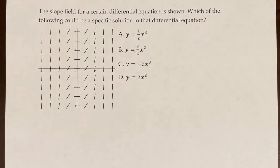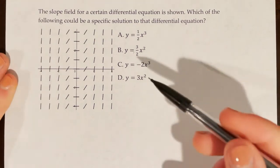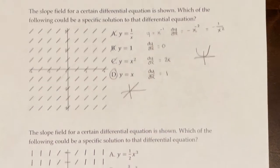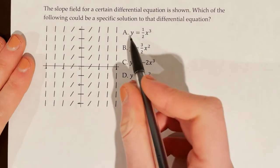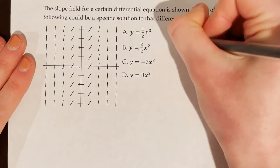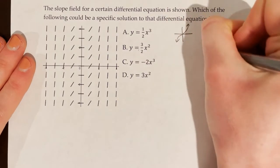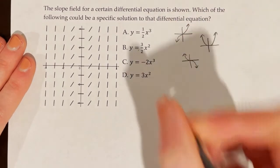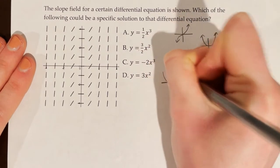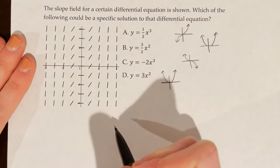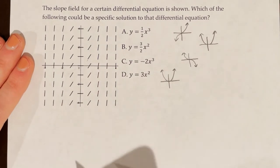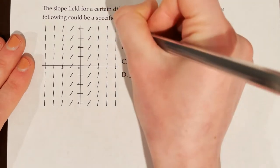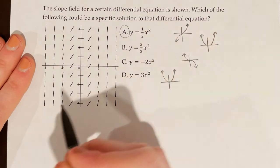For the next similar problem, we use the shortcut: sketch each equation and match the shape. y = (1/2)x³ looks like a cubic. y = (3/2)x² looks like a parabola. y = -2x³ looks like an inverted cubic. y = 3x² looks like a steeper parabola. The slope field's general shape shows very steep slopes initially, going to zero, then getting steep again — this matches a cubic. Therefore the answer is choice A: y = (1/2)x³.